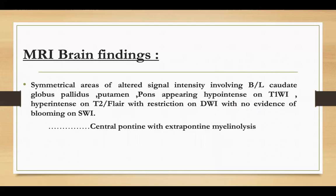These are all MRI brain findings. The symmetrical areas of altered signal intensity involving bilateral caudate, globus pallidus, putamen, and pons, appearing as hyperintensities on T1-weighted imaging and hyperintensities on T2 FLAIR with restriction on diffusion-weighted imaging, with no evidence of blooming on SWI. So the diagnosis was central pontine myelinolysis with extra pontine myelinolysis.